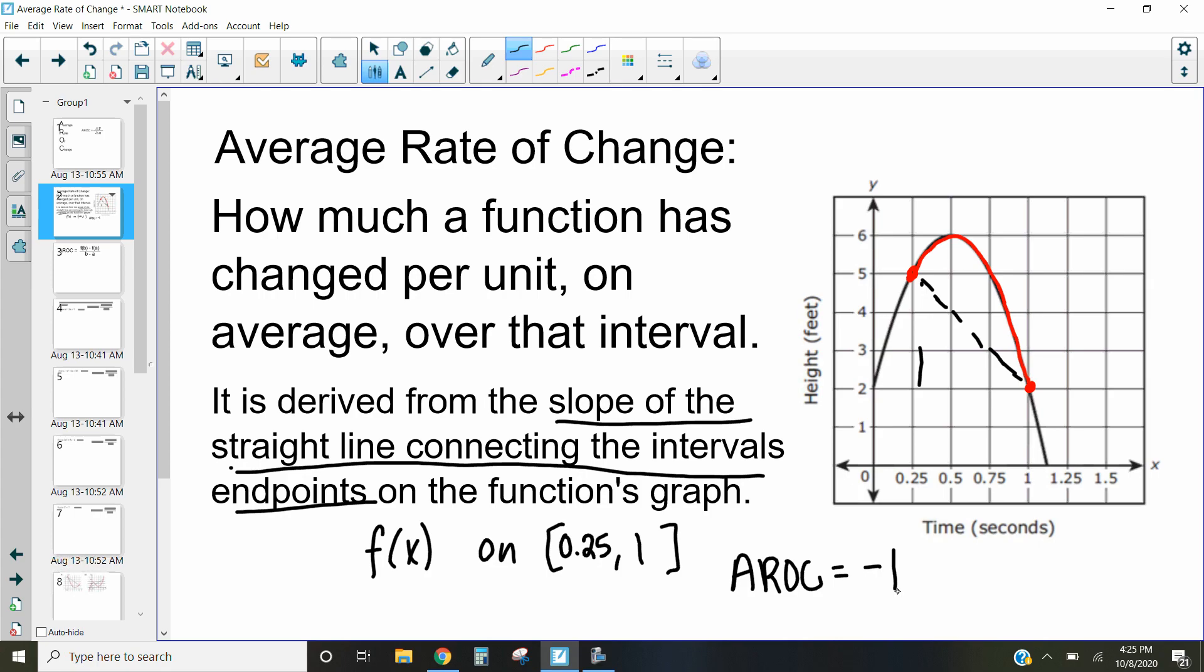So using that idea, we kind of have three different ways that we can find the average rate of change. Sometimes we're going to do it when we're given a graph. Sometimes we'll do it when we are given a function and an interval. And sometimes we can do it when we're given two points, and we'll see that when we're looking at a word problem.